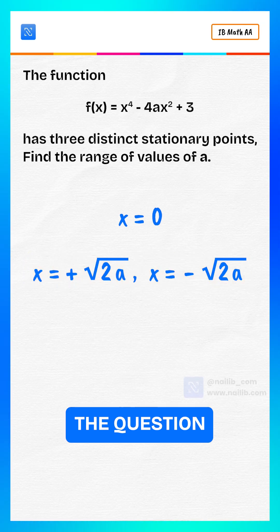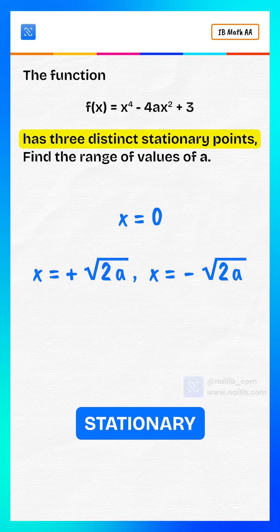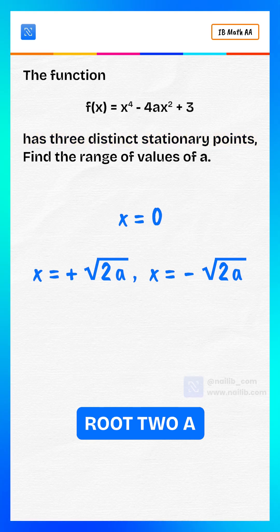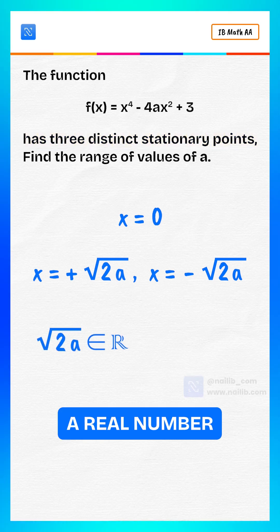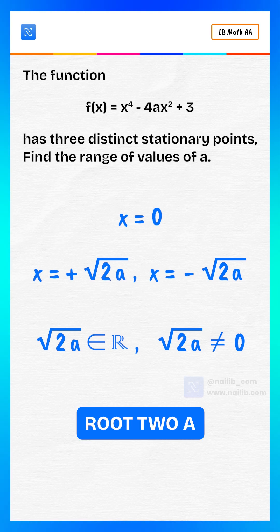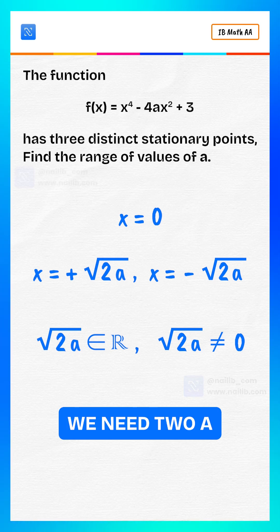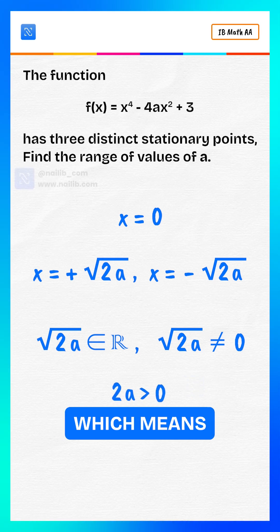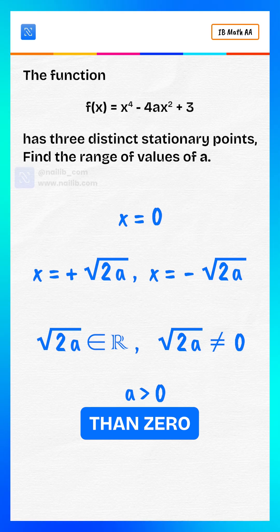Now the question says we need three distinct stationary points. That means root 2a must be a real number, and it must not be zero. For root 2a to be real, we need 2a greater than zero, which means a greater than zero.